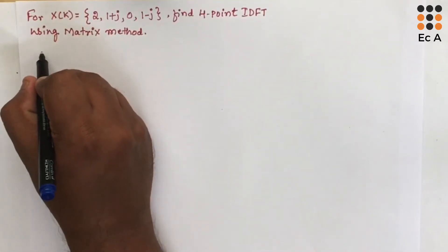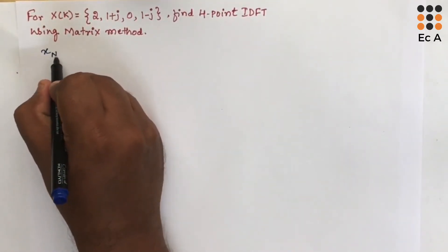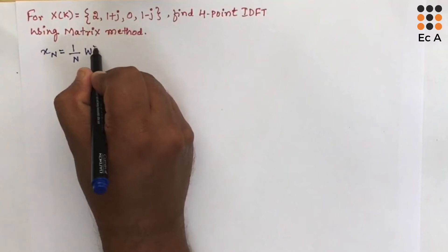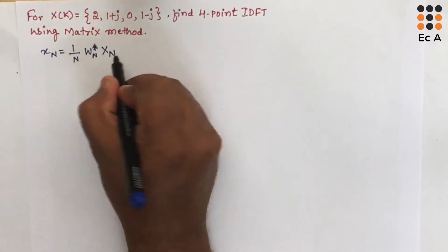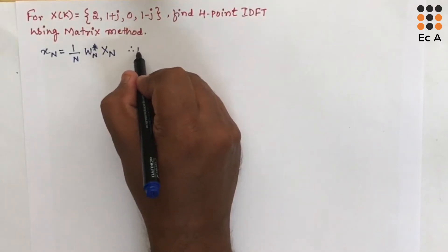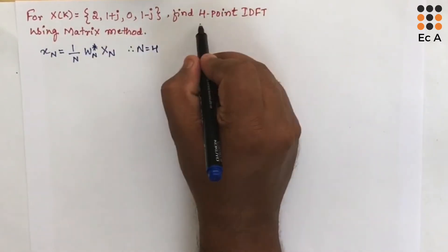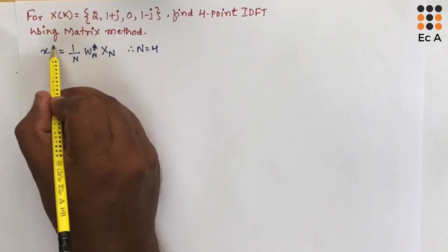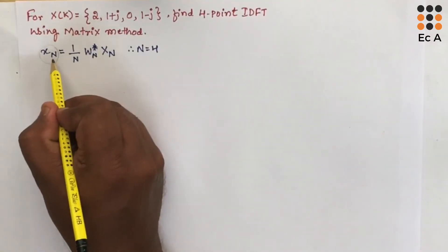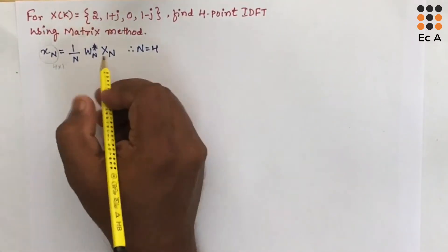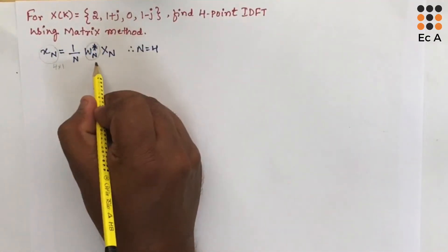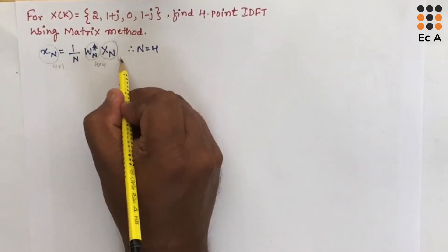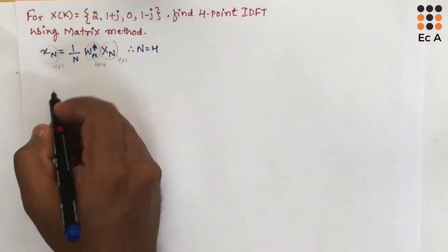We know we can find IDFT using the formula: x(n) = (1/N) * WN* * X(k). Here N = 4, since we are asked to find four-point IDFT. In this formula, x(n) is a 4×1 matrix, WN* is a 4×4 matrix, and X(k) is a 4×1 matrix.